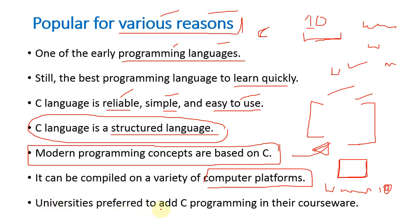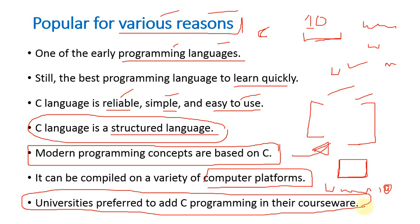Universities prefer to add C programming in their courseware. If you go for any two-year, three-year, or four-year engineering courses — master's, bachelor's, or diploma courses — whatever is related to IT, information technology, or computer science, you will find C programming in the syllabus, because C has that type of popularity in the IT market.